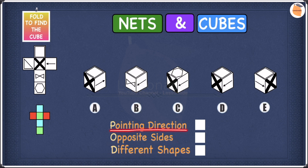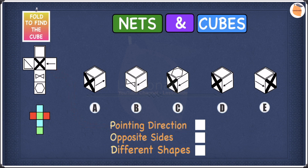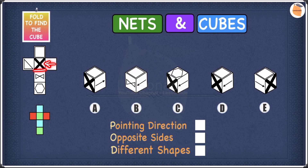Let's start with pointing direction first. If you have a look at the net and the arrow, you may notice that this arrow is pointing towards the X shape. So if we find an option in which the arrow is not pointing towards the X shape and is pointing somewhere else, then we cross that option off.